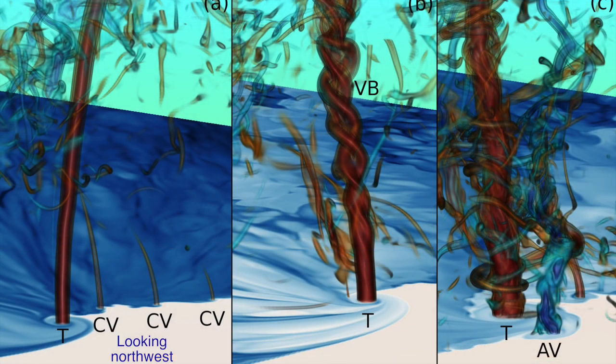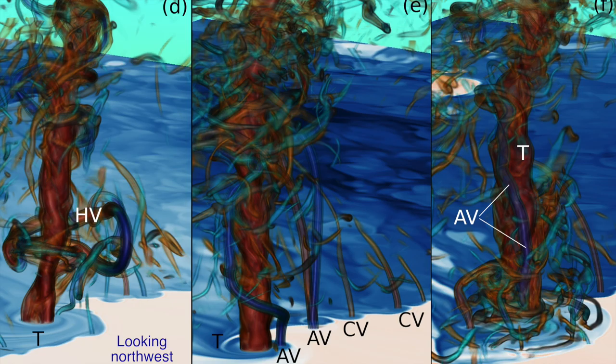Here are different stages of the vorticity throughout the simulation. CV stands for cyclonic vortex — they're red. The tornado is cyclonic, rotating counterclockwise in the northern hemisphere. But there are plenty of anticyclonic vortices as well. The cyclonic vortices get assimilated into the tornado, adding to its rotation. The anticyclonic vortices, however — it's like holding two magnets north pole to each other — fight with the tornado. The tornado ends up tilting the anticyclonic vortex into the horizontal and ejecting it. That vortex becomes a horizontal, hairpin-shaped vortex that gets wrapped around the tornado.